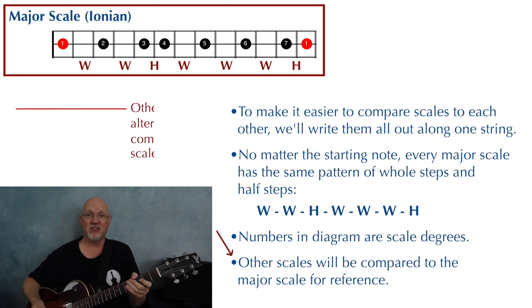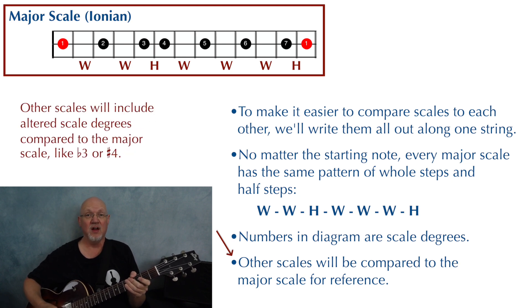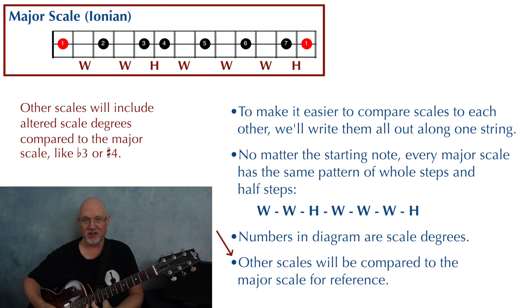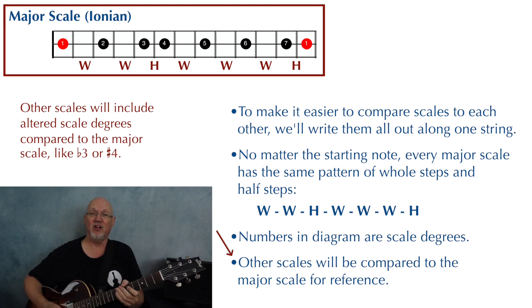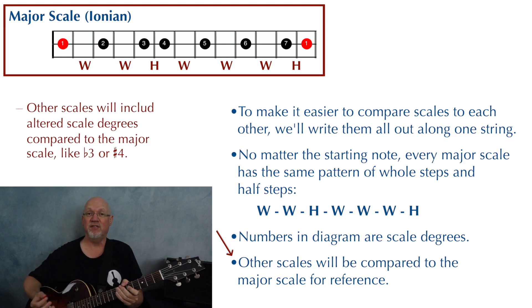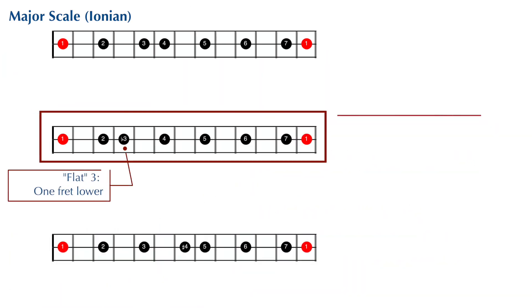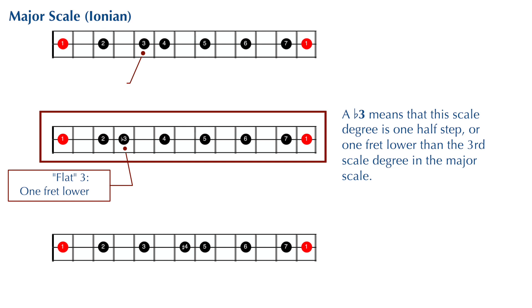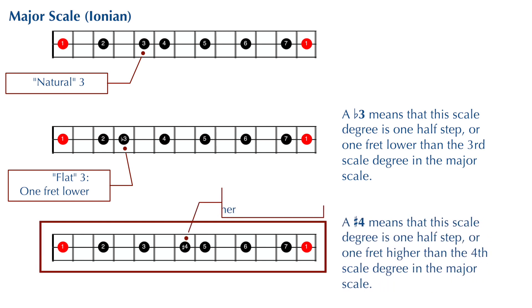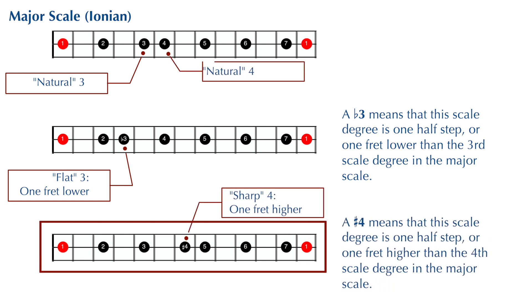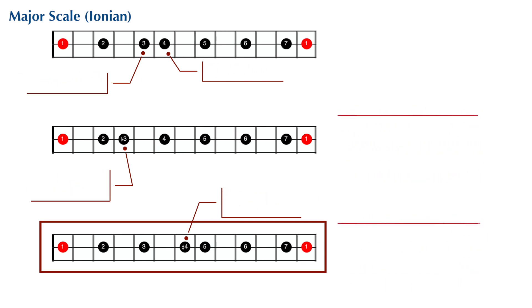In Western music, we compare our scales to the major scale. So while the major scale has a one, two, three, four, five, six, seven, and then one, another scale may have a flat three or a sharp four. If you see a flat three, that note is going to be a half step or one fret lower than it would be in the major scale. And if you see a sharp four, that note is going to be a half step or one fret higher than it would be in the major scale.